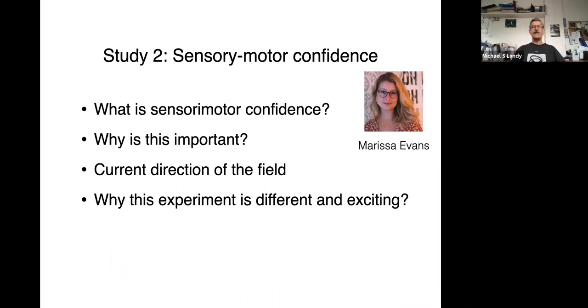Second study, sensory motor confidence. So Marissa Evans is a first year graduate student in my lab, and she's working on vision and action. And in particular, after a reach, how confident are you in the quality of that reach, whether it landed on or near the target that you were aiming at? This is important because after a reach, you might want to know how well it worked out to know whether you should repeat it, whether you should practice it, whether you should deal with the consequences of missing the target you were aiming at.